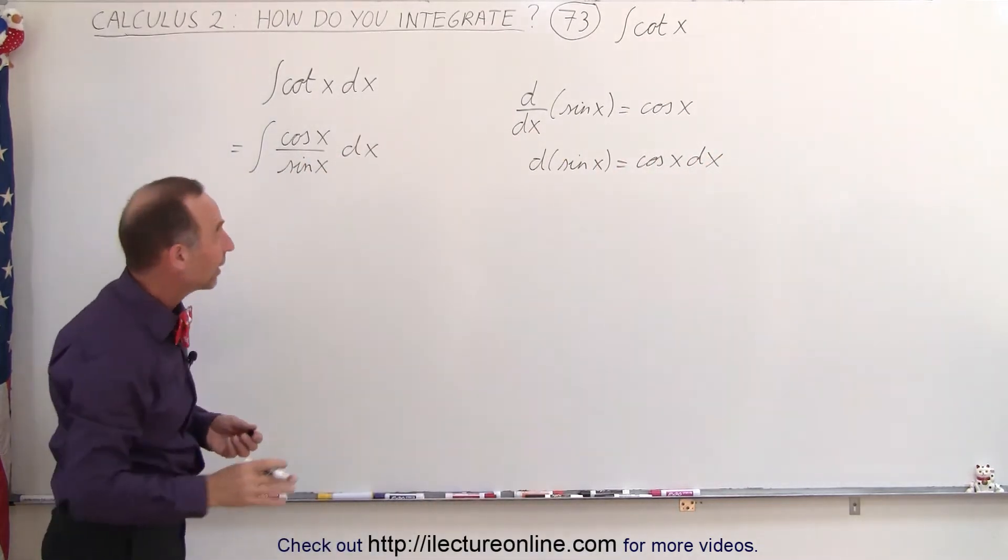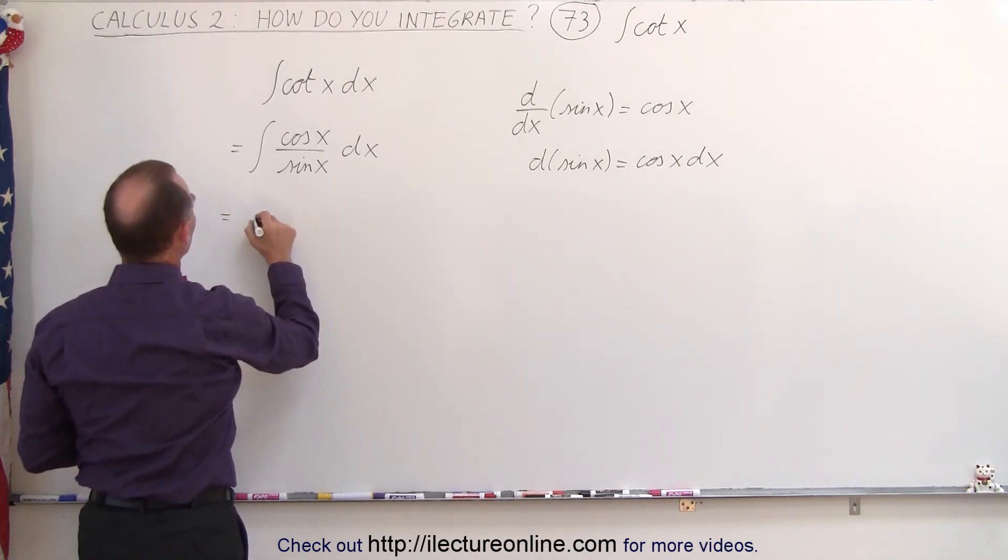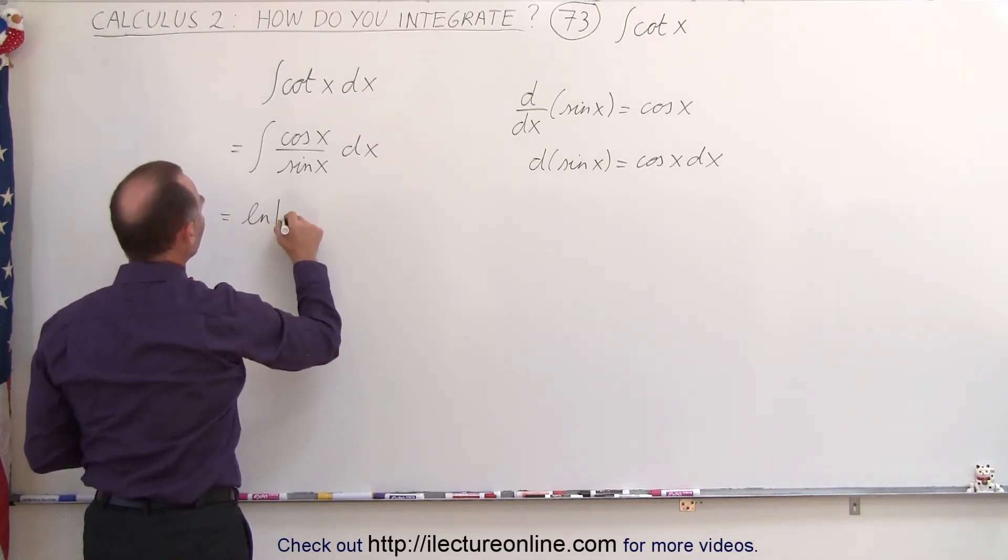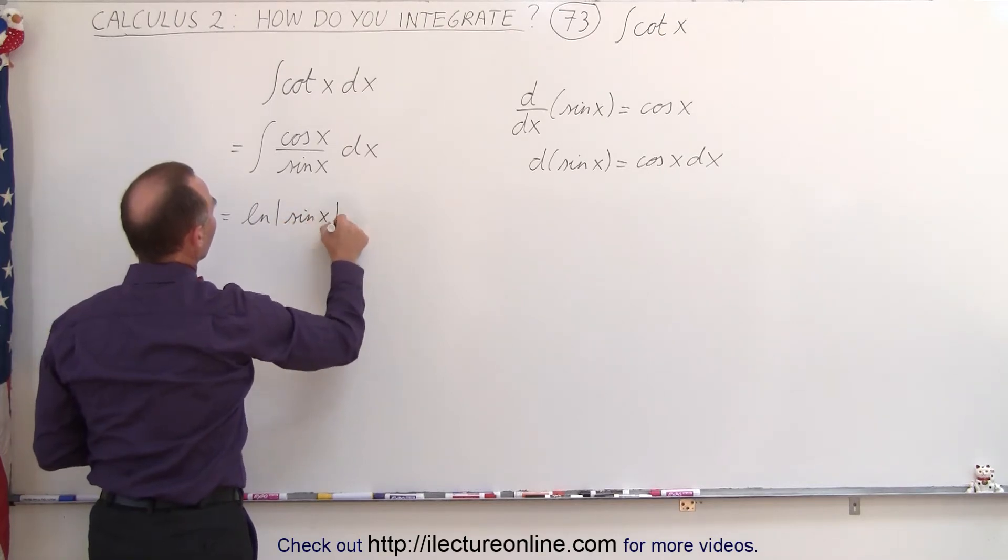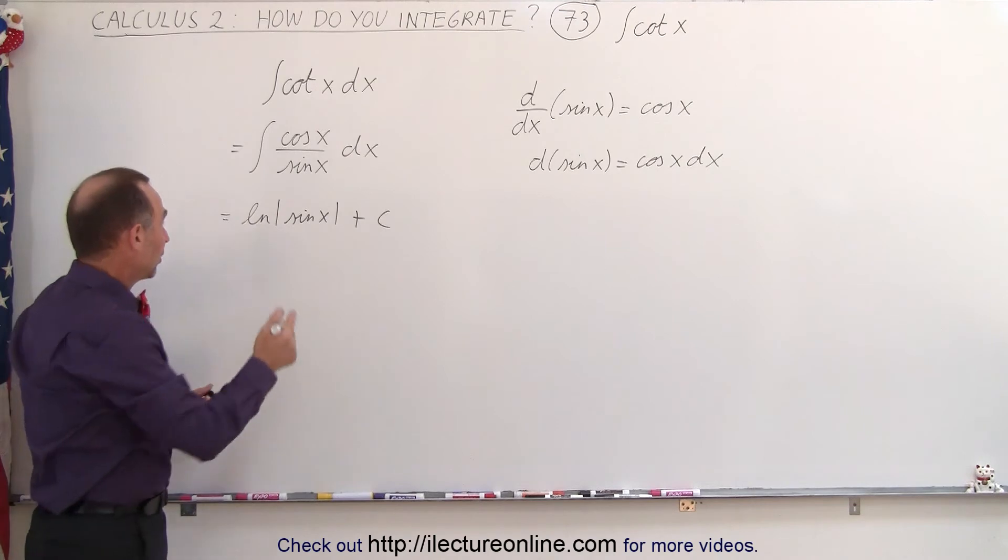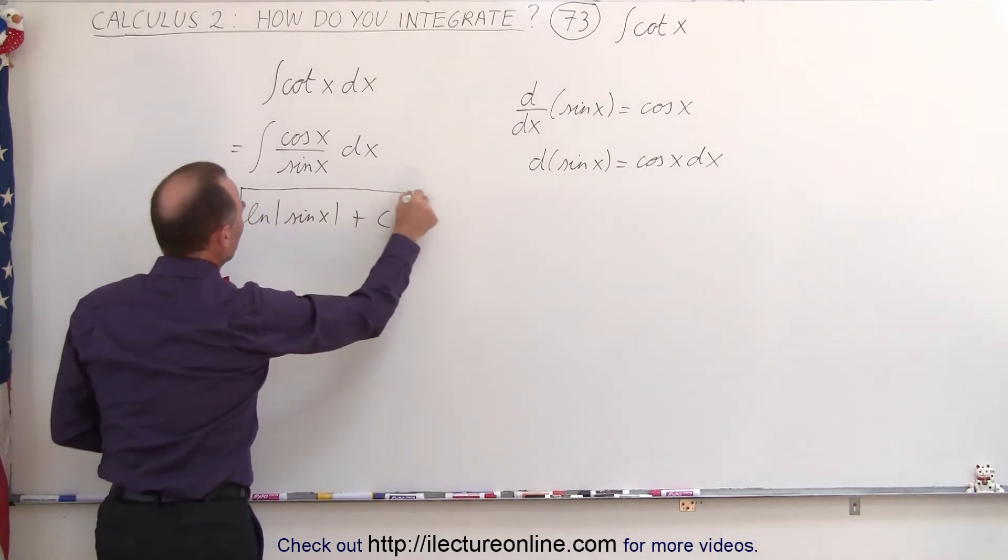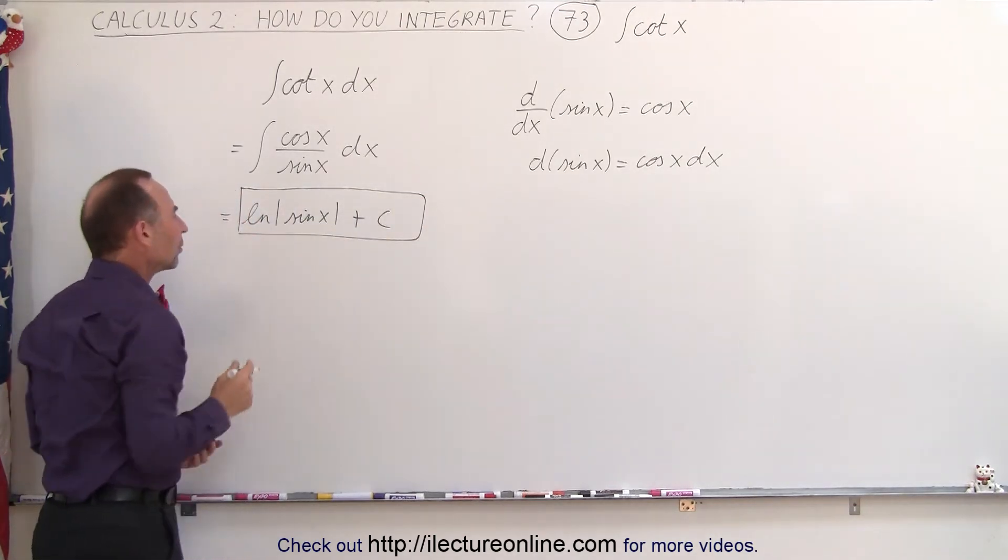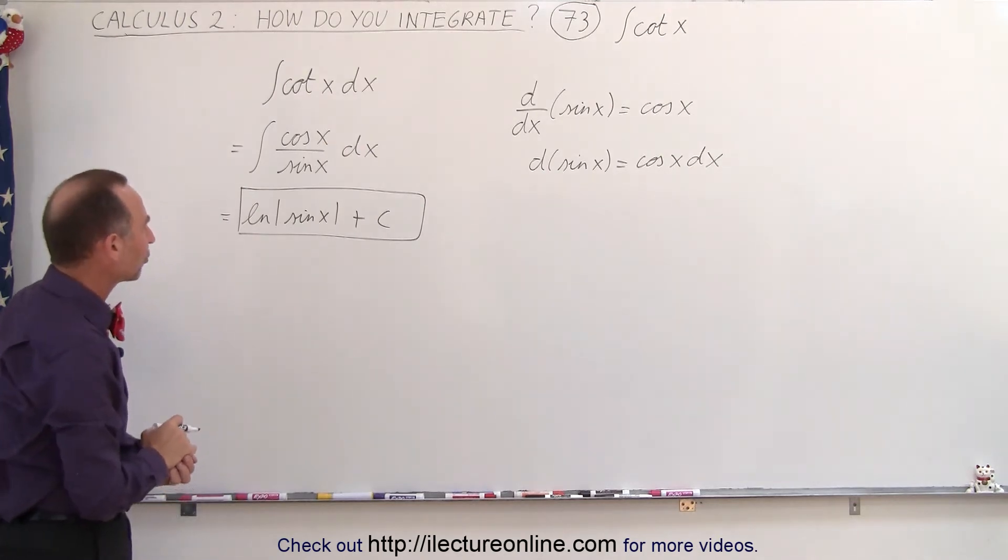So therefore we can integrate this using the natural log. So this becomes equal to the natural log of the sine of x plus a constant of integration. And that is the answer. We can stop right here. But then when you look at a table of integrals, you may not see this exact format of the answer.